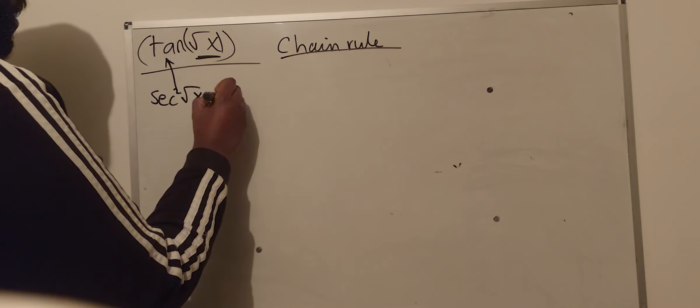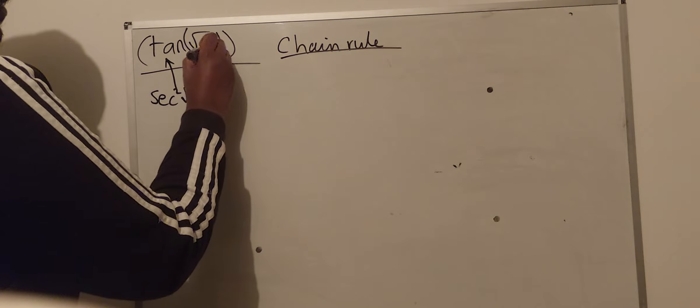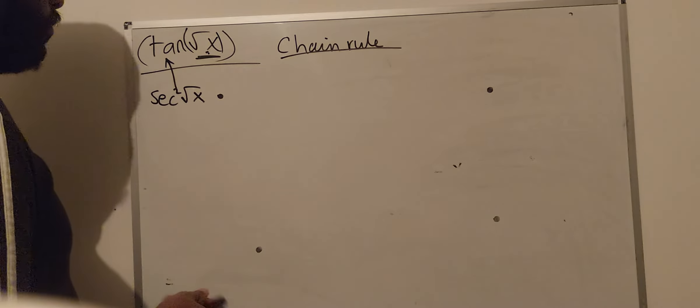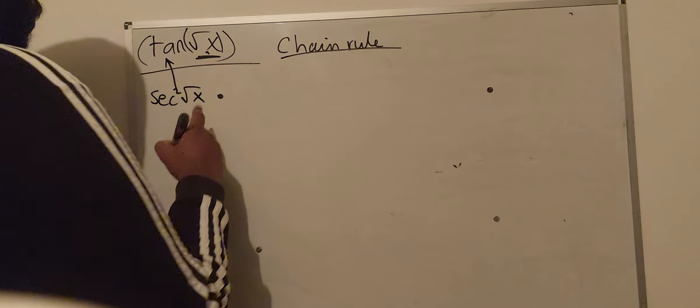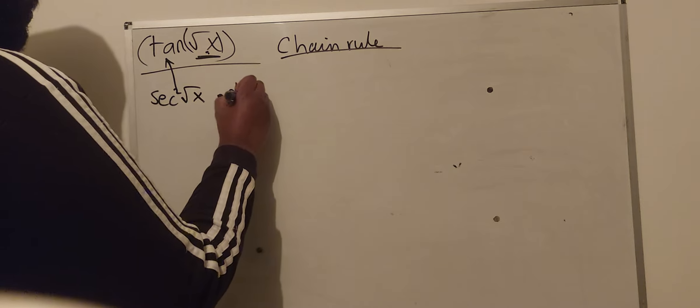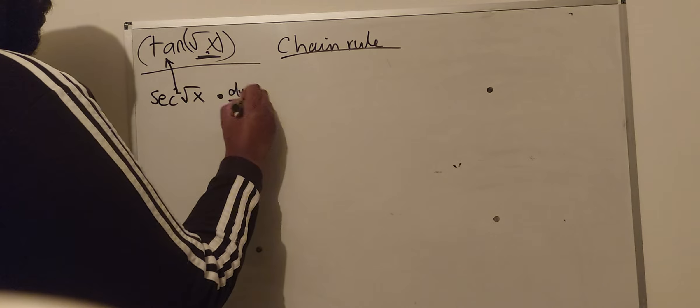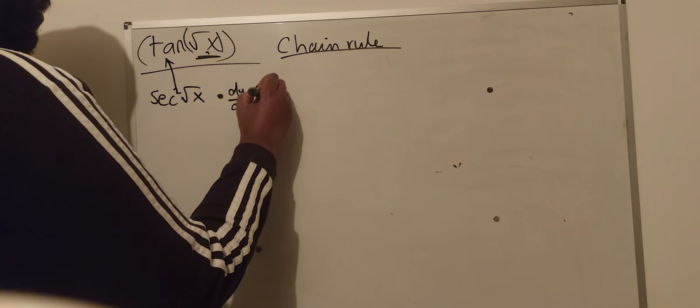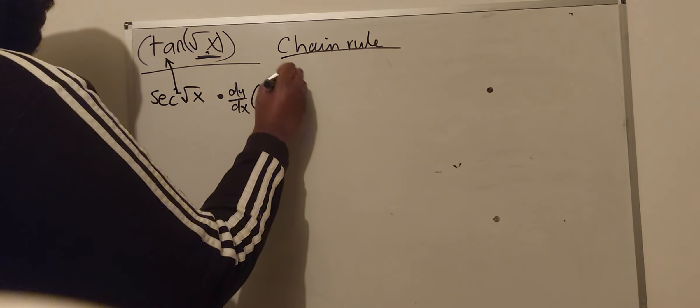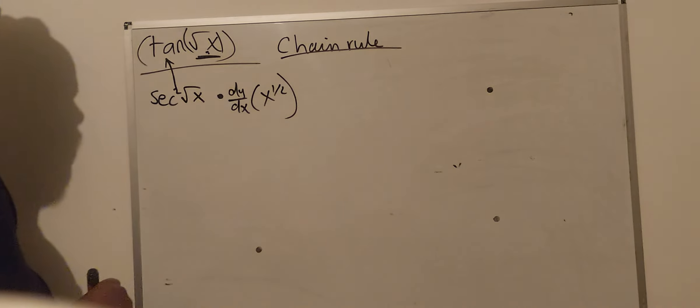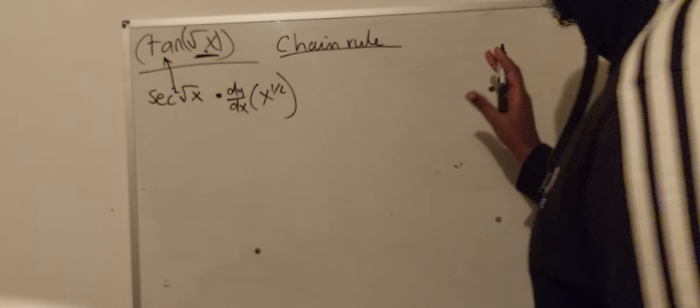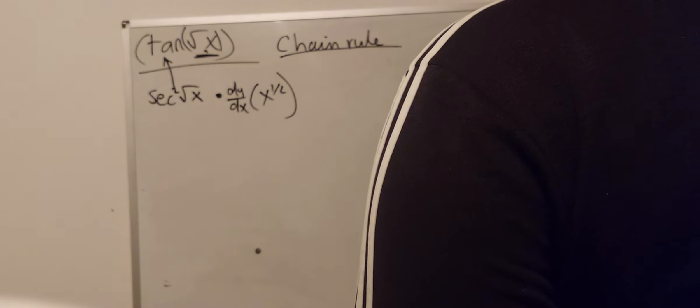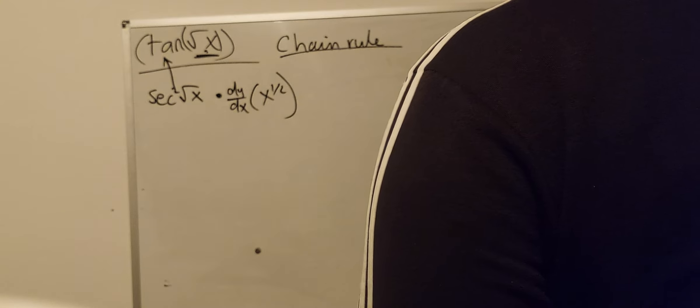And then you multiply that by the derivative of x to the power of a half, or the square root of x. Multiply that by dy divided by dx of x to the power of a half. Now let's do x to the power of a half on this side here. How do we solve this? How do we find the derivative of this?